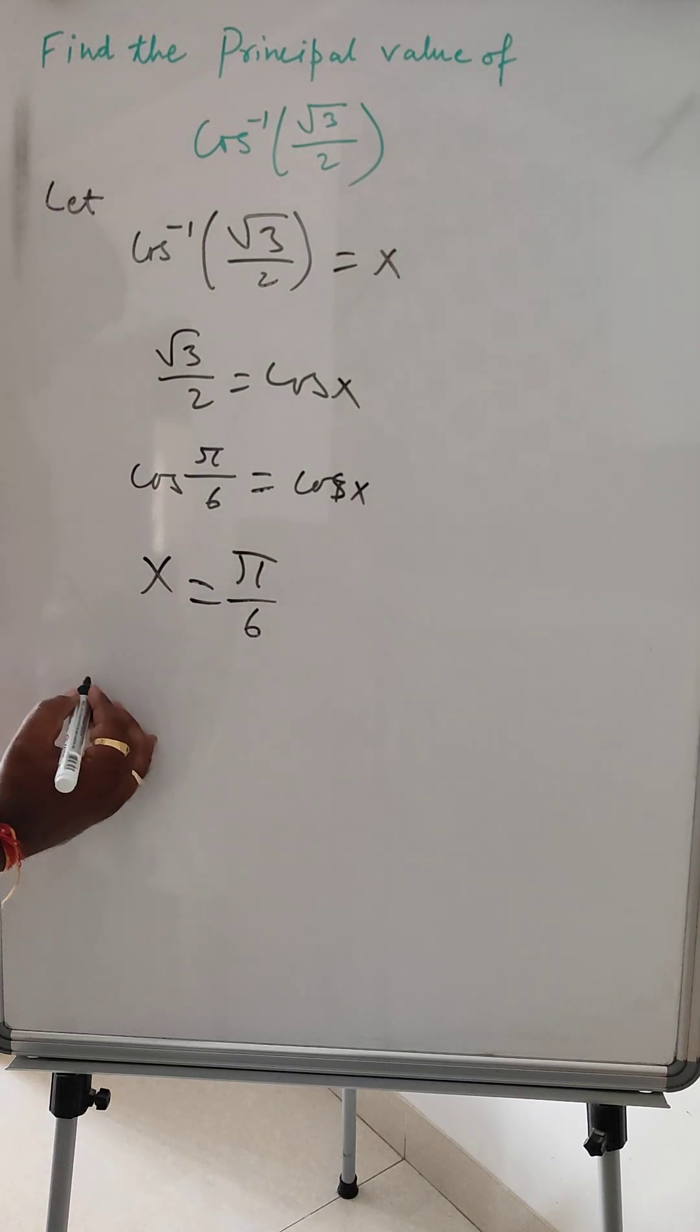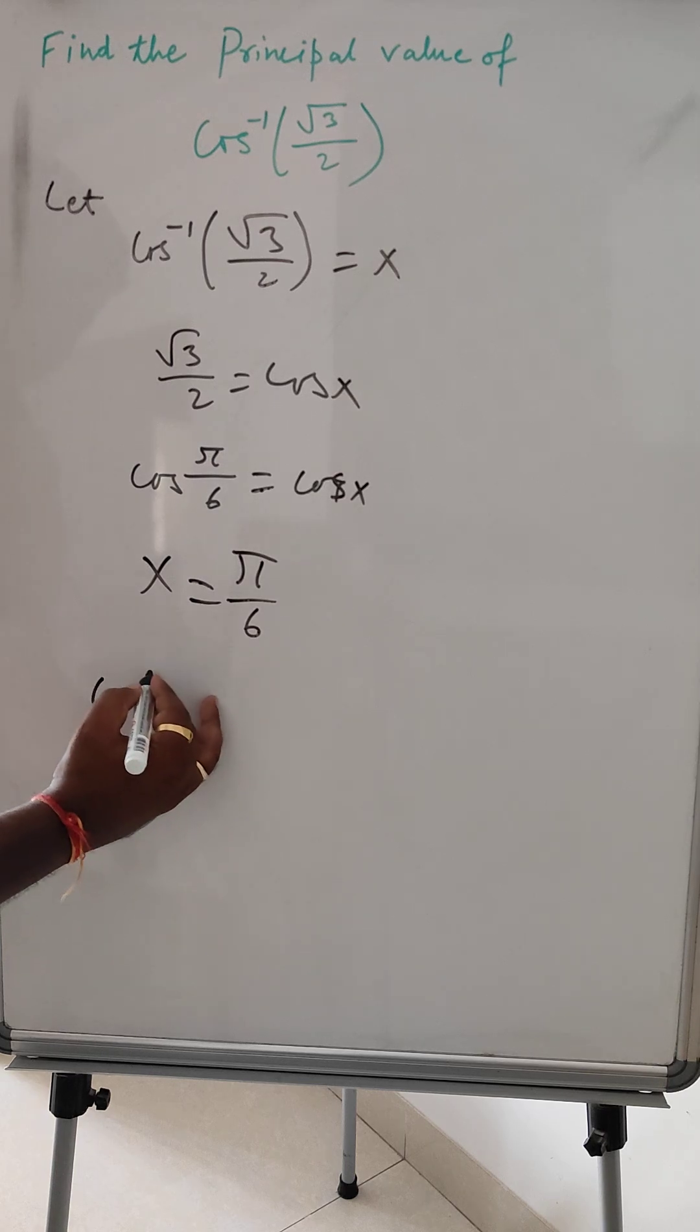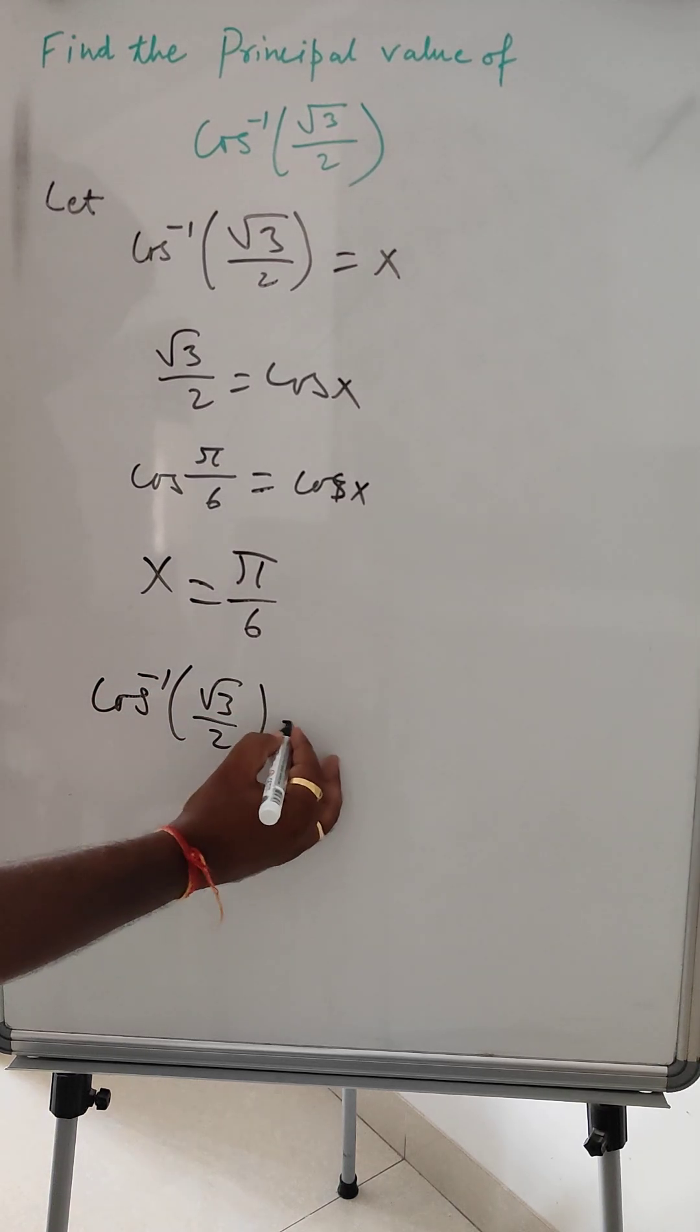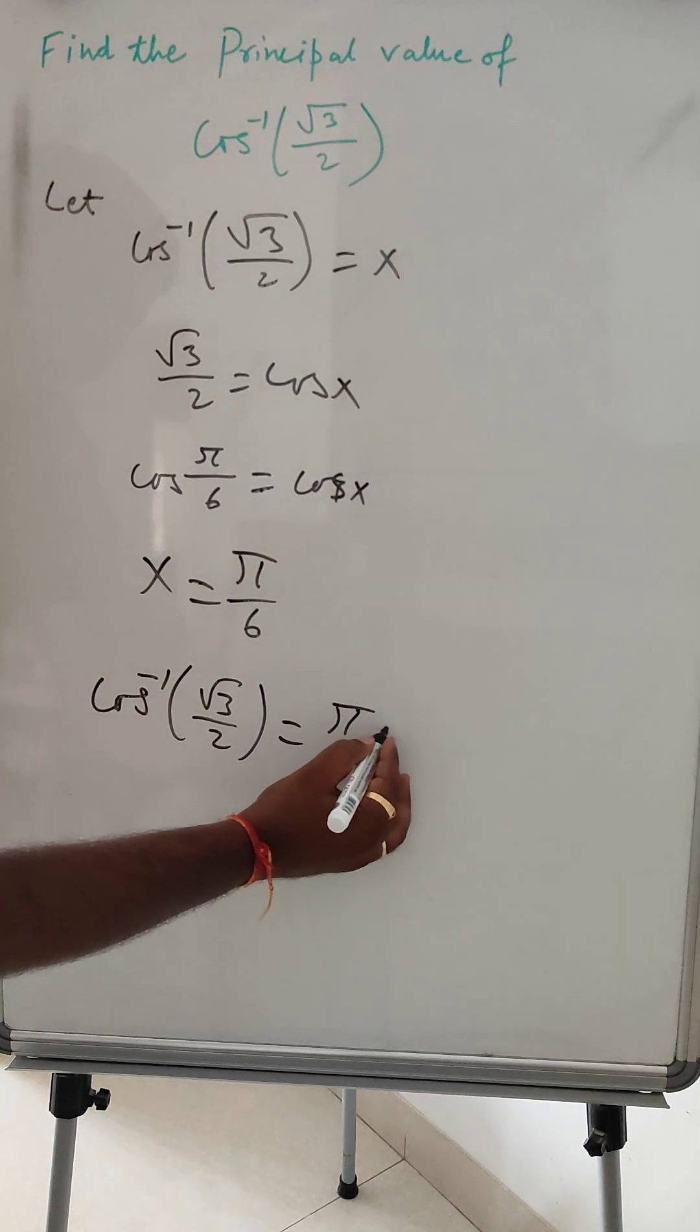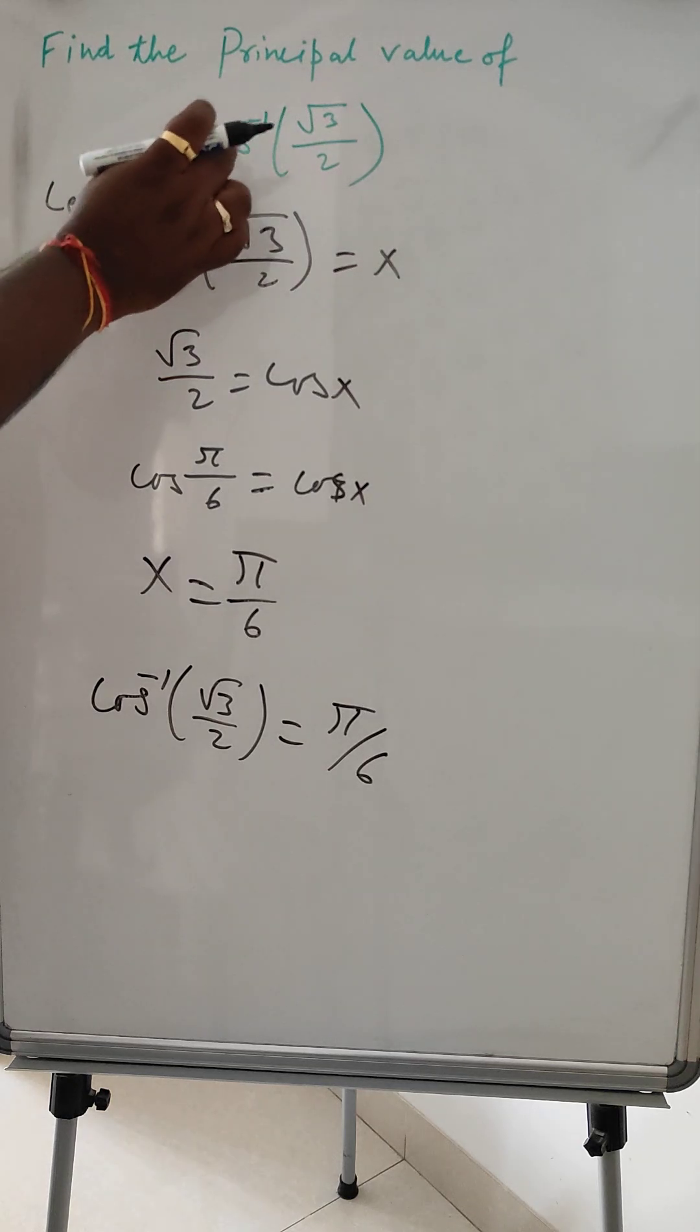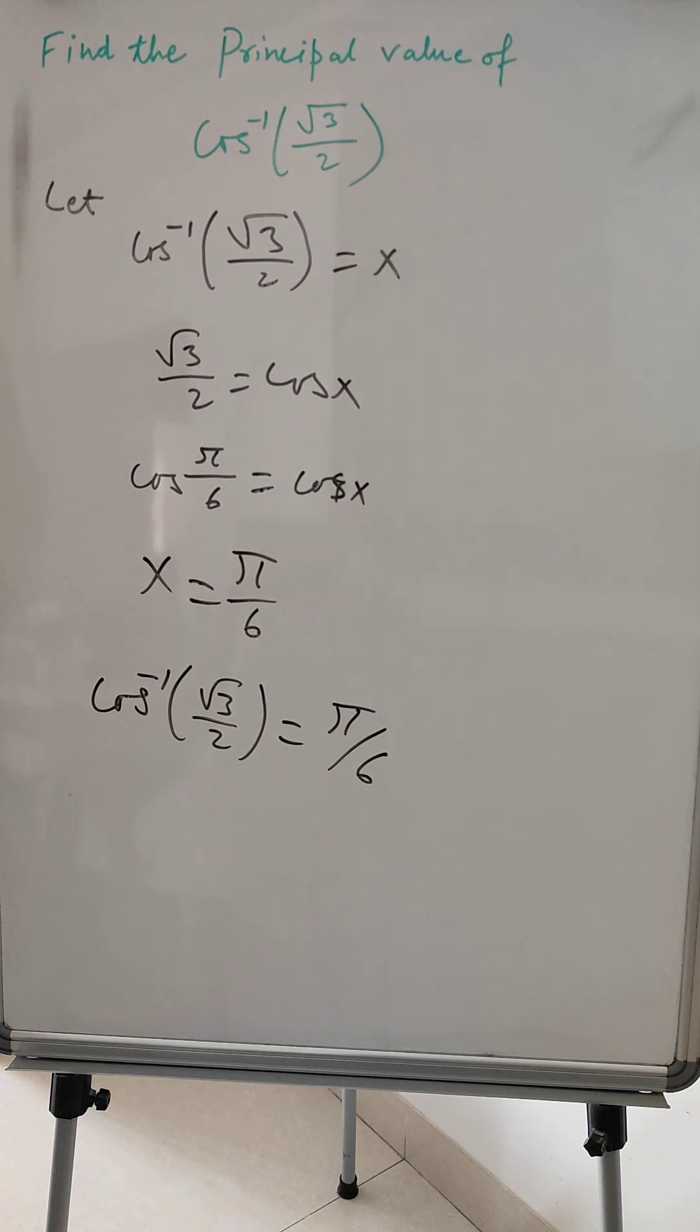Therefore, cos inverse of √3/2 equals π/6, which is the principal value.